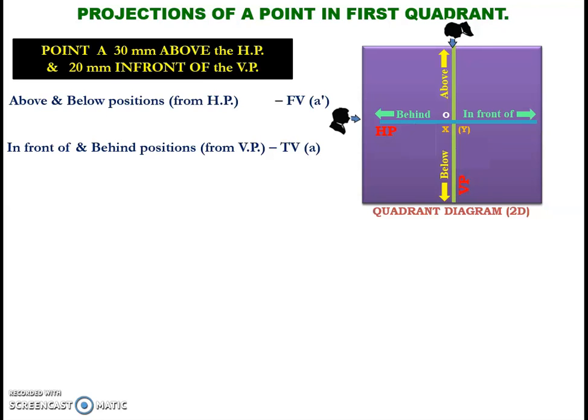Same way, to get the top view positions, we have to view or visualize the object from the top and we can represent the top view using small letter A. Now, you can see the first quadrant diagram, you can see the above and in front of positions and both the axis are meeting at a particular point that is origin and temporarily I am assuming that the origin and the front view point and top view point are located here.